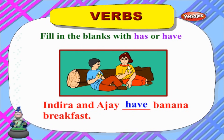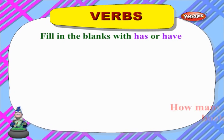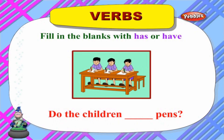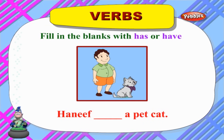'Indra and Ajay ___ bananas for breakfast' — we are talking about two people, so we use 'have': 'Indra and Ajay have bananas for breakfast.' 'How many pages does this book ___?' — pages is plural, so we use 'have': 'How many pages does this book have?' 'Do the children ___ pens?' — children is plural, so we use 'have': 'Do the children have pens?'